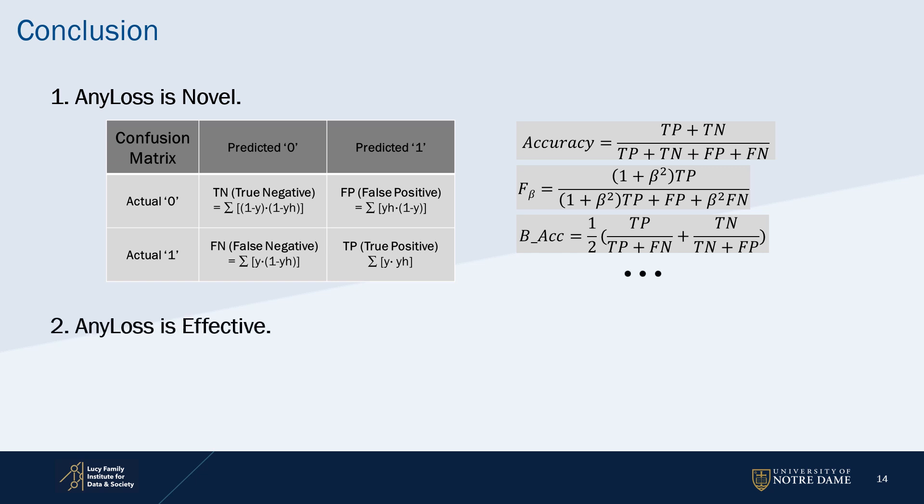AnyLoss is effective. It is generally available, works better with imbalanced datasets, and shows fast learning speed.